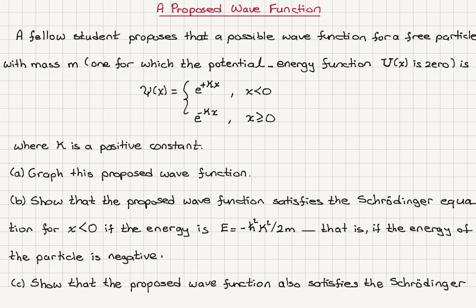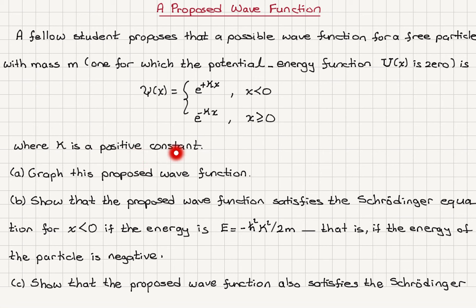A proposed wave function. A fellow student proposes that a possible wave function for a free particle with mass M, one for which the potential energy function u(x) is zero, is psi(x) equals e to the plus kappa x for x negative, and minus e to the minus kappa x for x greater than or equal to zero, where kappa is a positive constant. Part A: graph this proposed wave function.